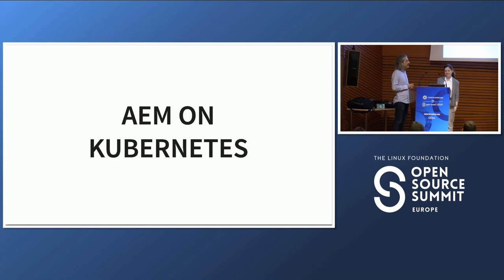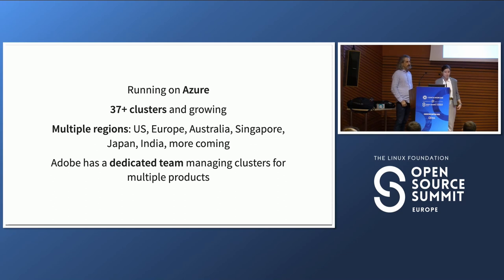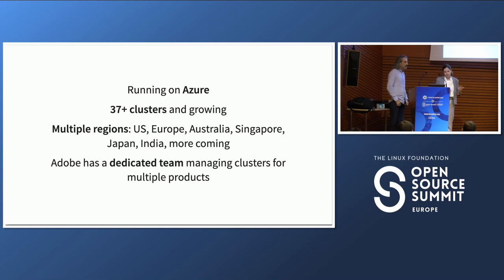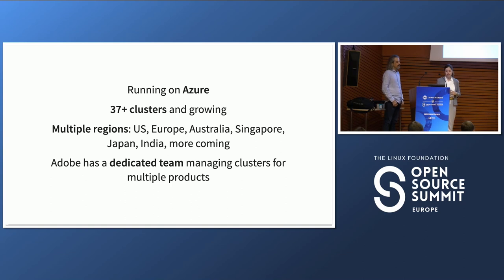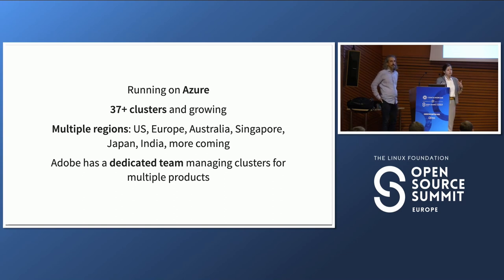We use Kubernetes, running on Azure Cloud, and we have more than 37 clusters right now, but growing. We are present on multiple regions because we have different customers across the world, so we need different availability zones — the States, Europe, Australia, Singapore, Japan, India, and more are coming. At Adobe, we have a dedicated team that manages the clusters and provides them to us, like an internal provider.